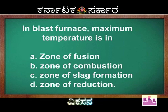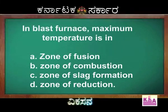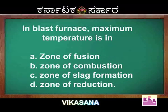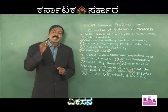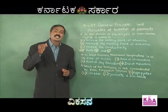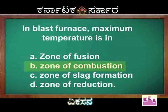The zone of reduction takes place at 500 to 800 Kelvin. The zone of slag formation occurs at approximately 1123 Kelvin. The zone of combustion reaches the maximum at 1500 Kelvin. Therefore, the maximum temperature in the blast furnace lies in the zone of combustion — the right option is Option B.